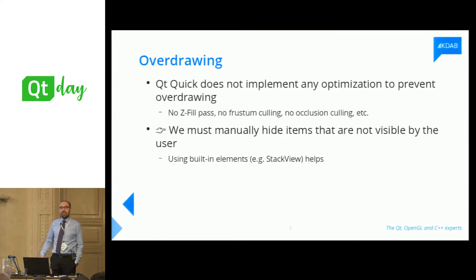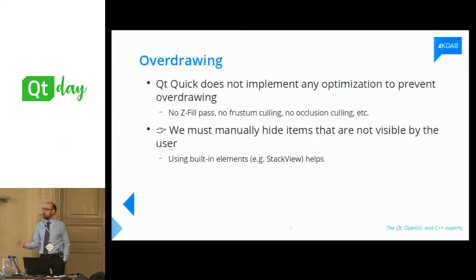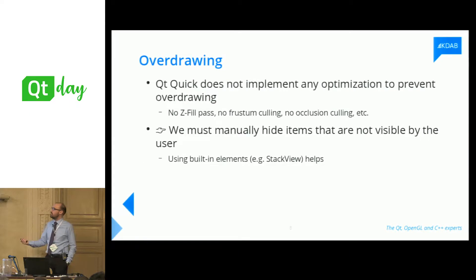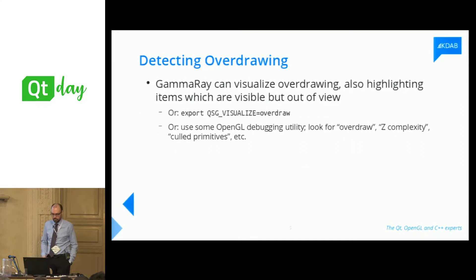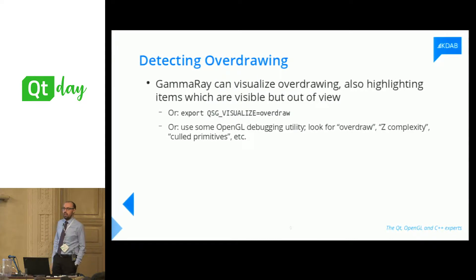Doing this manually can be tedious. For that reason, using built-in elements and reusing stuff like StackView or SwipeView is a good idea — do not reinvent those elements from scratch, because they do the right thing. How do I detect if I am overdrawing in the first place? The easiest way is to run your application in GammaRay and switch it to overdraw visualization mode, and you are going to see if you're overdrawing.